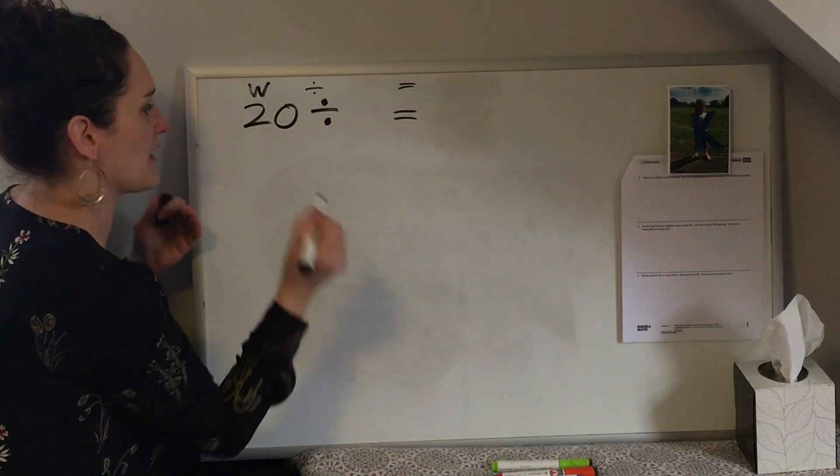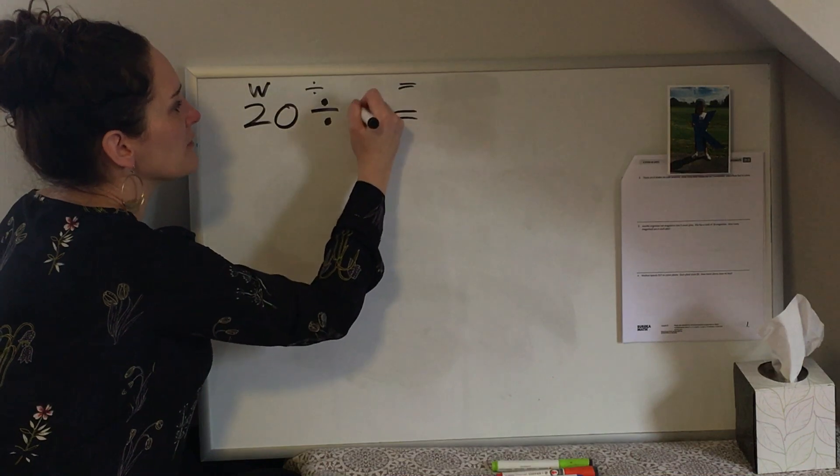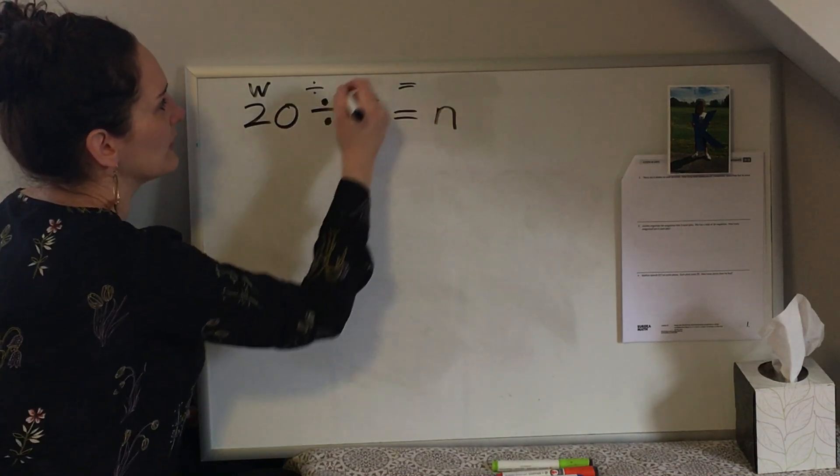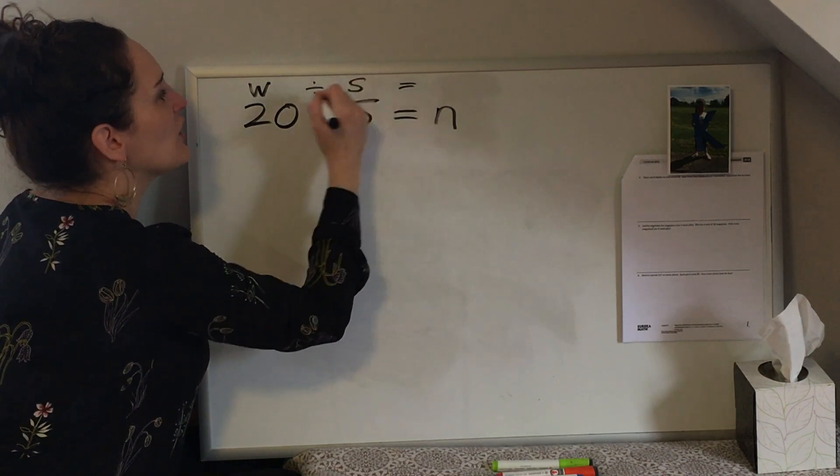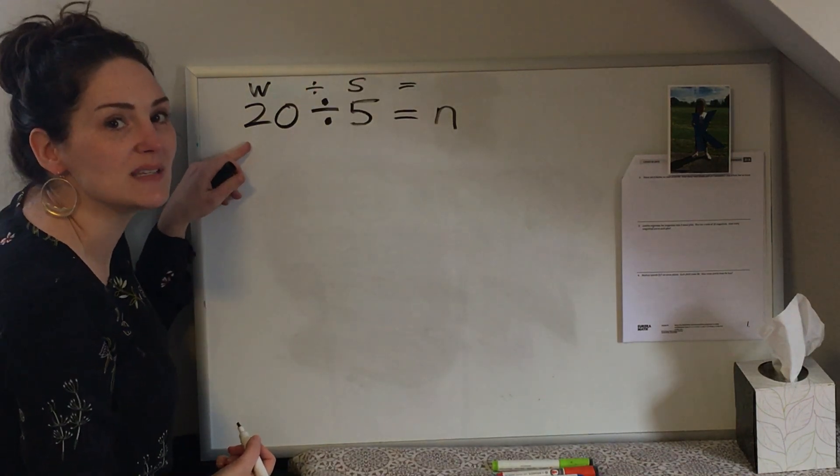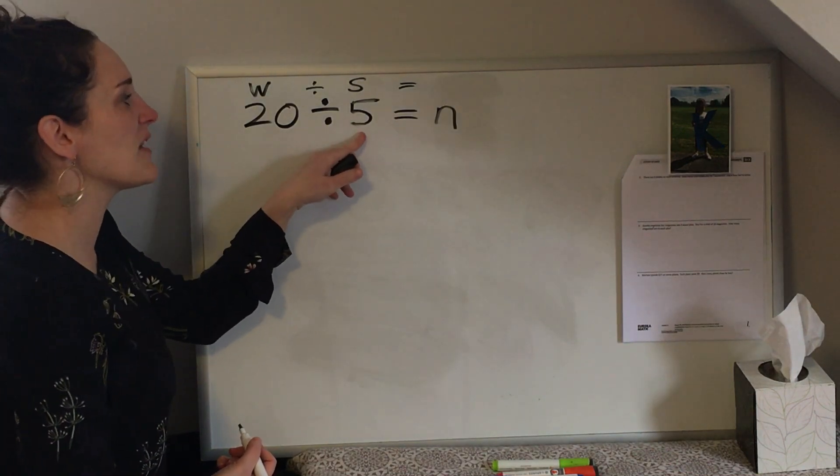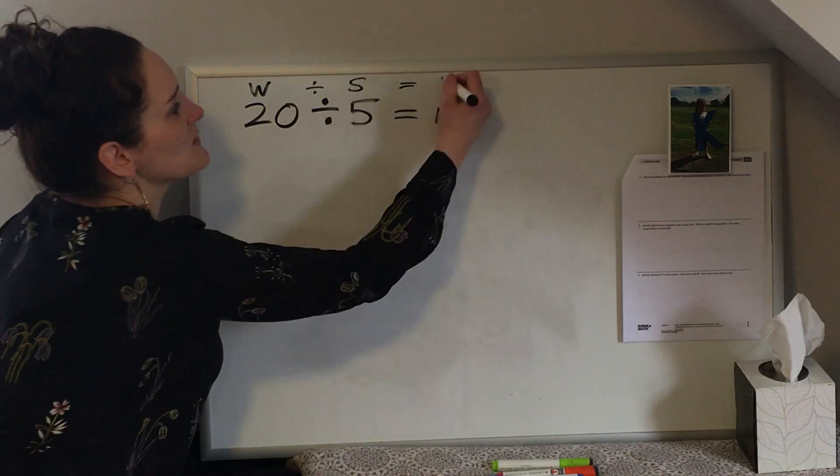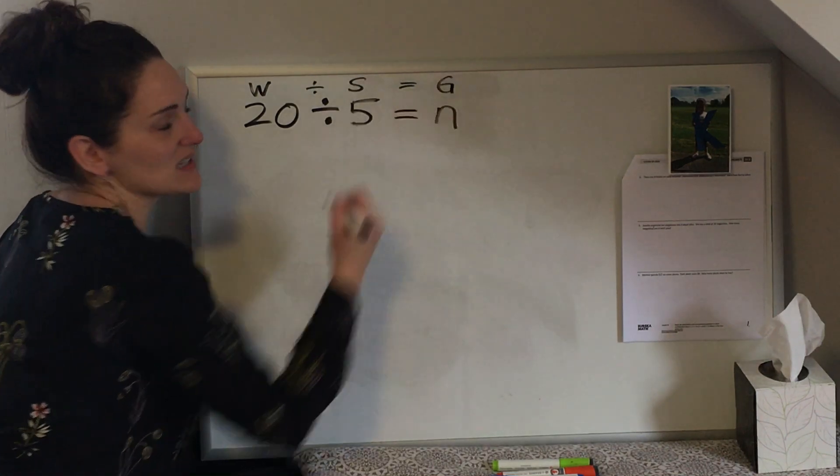So let's do it the other way now. Let's pretend that I know that I have 20 divided by 5 and I have to figure out my unknown, and this time I already know my size. My whole is 20 so let's pretend I have 20 pieces of candy and I know that there are five pieces of candy in each bag. What I don't know is my number of groups or packages that I bought.